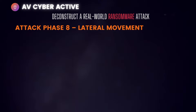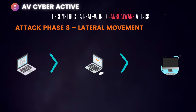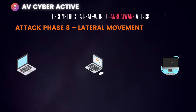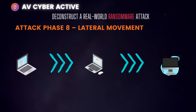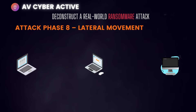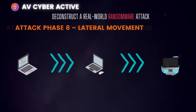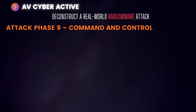Phase eight is Lateral Movement, which consists of techniques adversaries use to enter and control remote systems on a network. Following through on their primary objective often requires exploring the network to find their target and gain access to it, pivoting through multiple systems and accounts to gain privileged access.